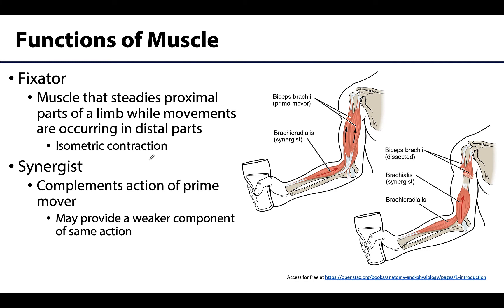All right, let's talk fixators. I have a nice image kind of showing this here. The fixator is going to be a muscle that most typically will steady a proximal part of a limb, and this will help to allow more clean and efficient movements on the distal portion of a limb. These are more isometric contractions — there's contraction and tension occurring, but no movement occurring on that proximal end. It's kind of keeping that proximal end in place in order to be able to forcefully contract some of the muscles on the more distal end.